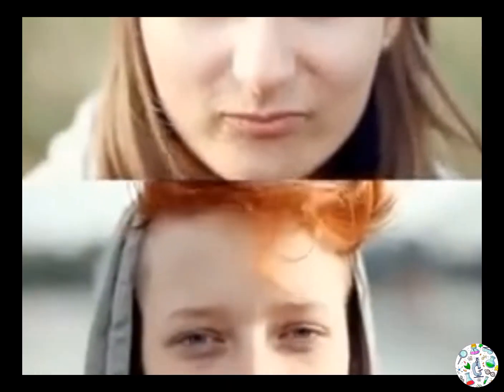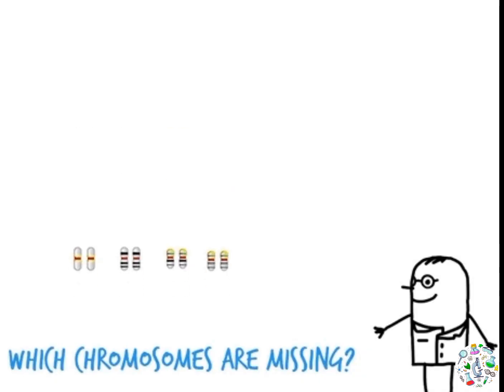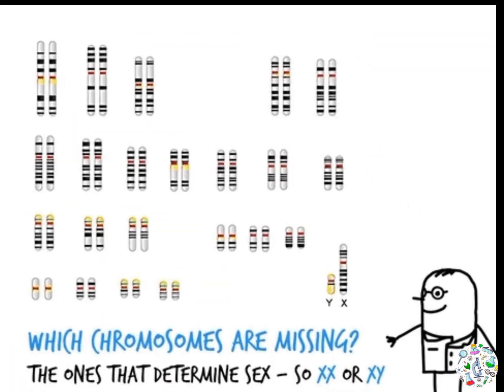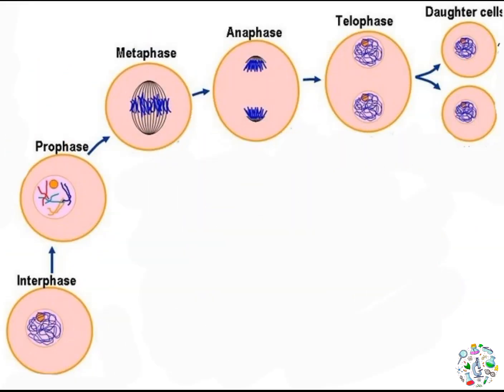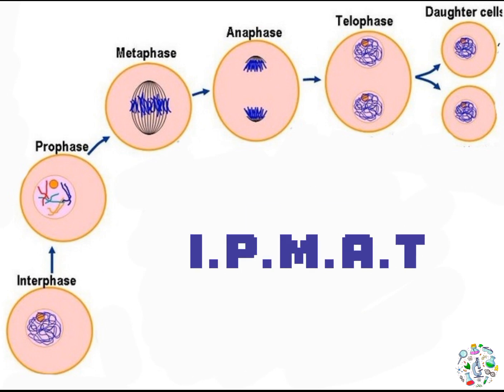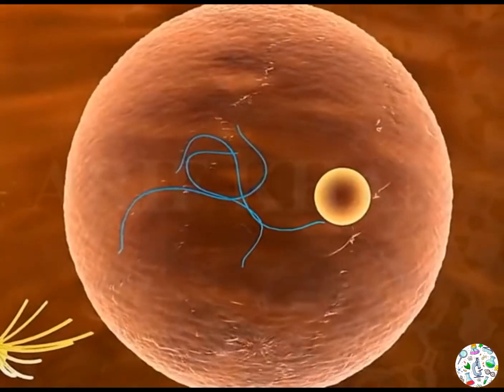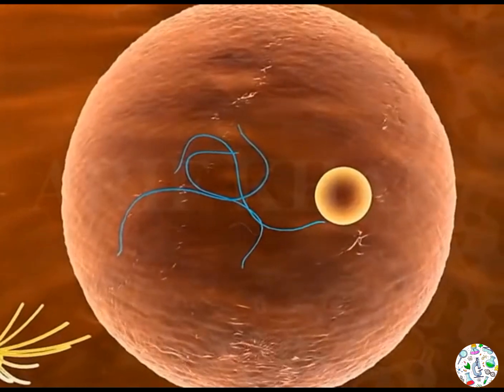The number of chromosomes present in every organism is different, but it is always fixed for a particular species. For example, in humans you are going to have 23 pairs of chromosomes — 46 chromosomes in total in the cells of our body. Back to mitosis: mitosis consists of five stages — interphase, prophase, metaphase, anaphase, and lastly telophase — or simply referred to as IPMAT. These stages are not distinct; they simply describe the behavior of chromosomes during mitosis.